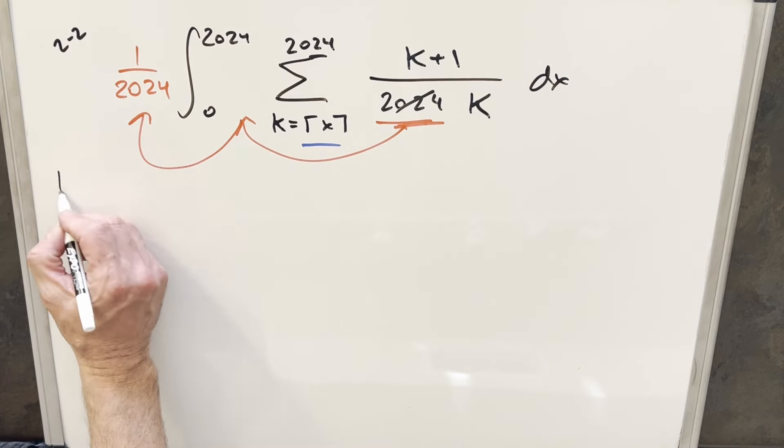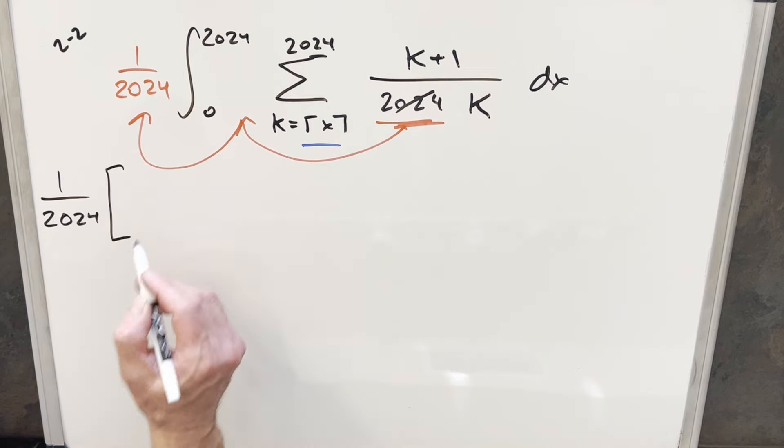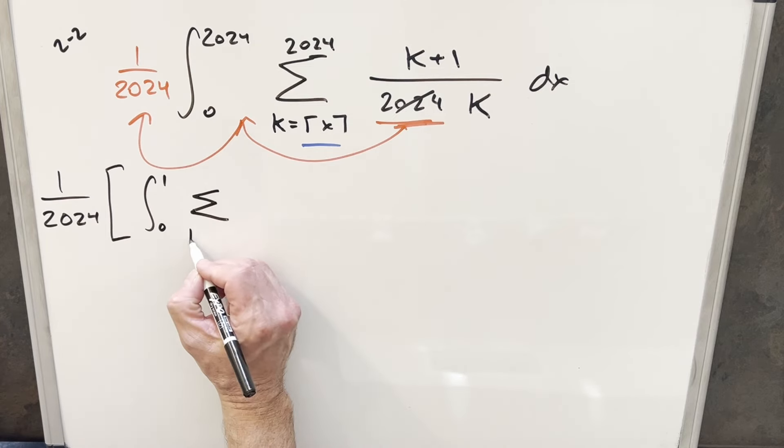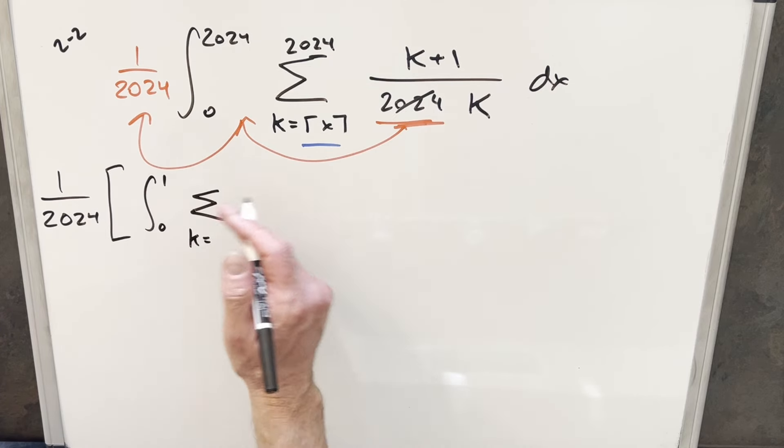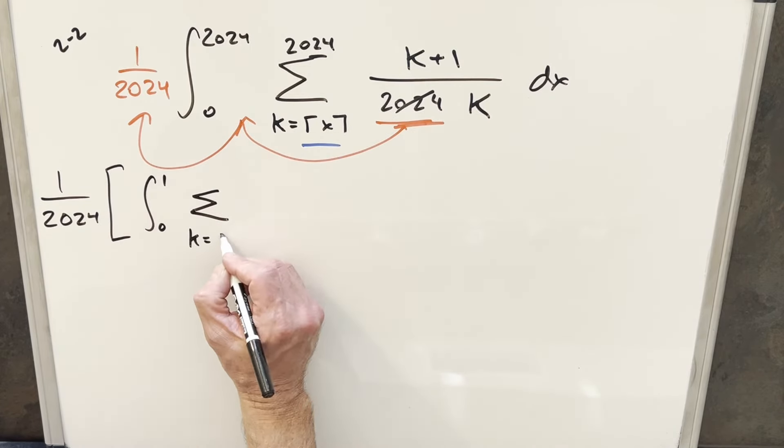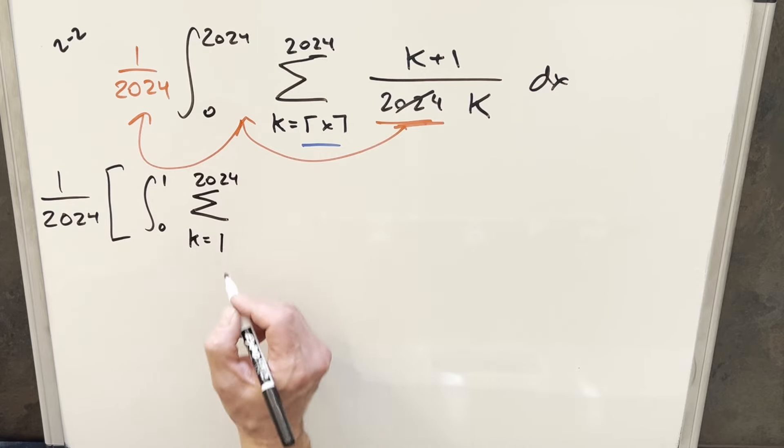We'll take this one over 2024, we'll have this all the way in front. And then we break this up, our first integral, we're just going from zero to one. But now for this k value, we can actually simplify this, because all of our x values are going between zero and one, the ceiling function is going to round us up. So for this x value with these bounds, this value is always going to be one, and we're still going to 2024 here.